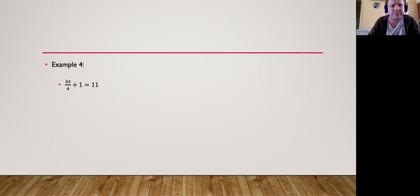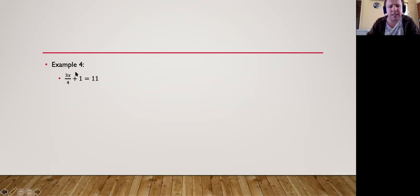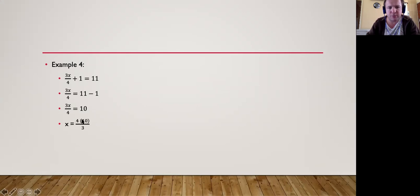Example 4 — a more complicated example from Grade 8: 3x over 4 plus 1 is equal to 11. Move the 1 over to the other side: 11 minus 1 equals 10. Then to solve for x, multiply both sides by 4 and divide by 3 — so x equals 4 times 10 over 3, which gives 13 and one-third, or 40 over 3.